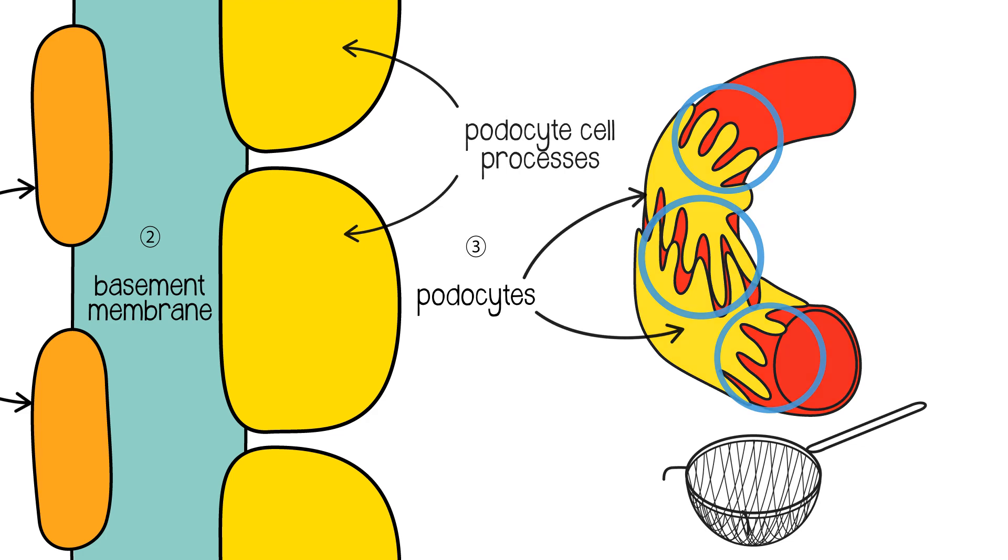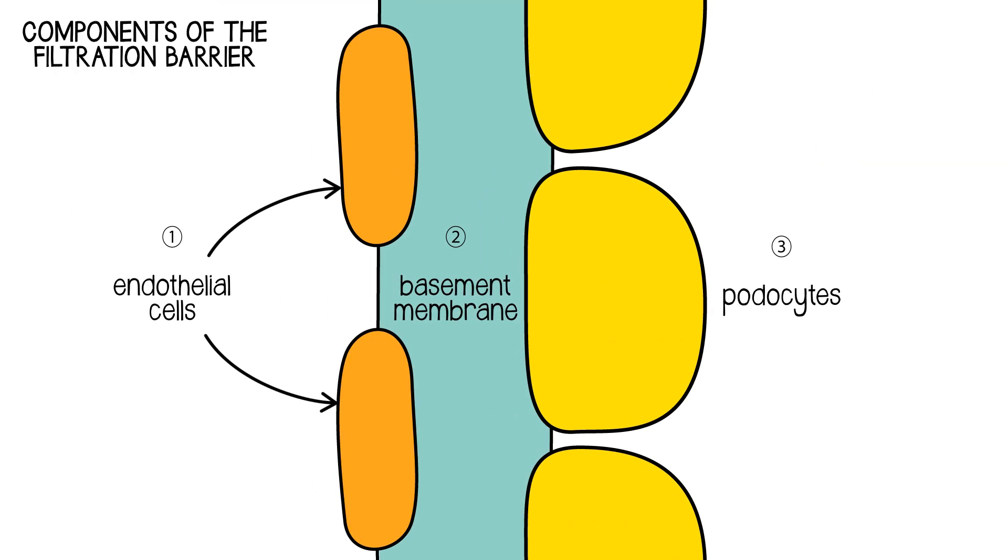So you've got then these three barriers: capillary cell, basement membrane, podocyte cell. And that helps to sieve out the larger particles and prevent them from crossing.